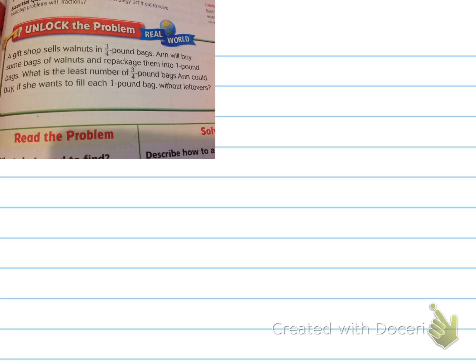A gift shop sells walnuts in three-fourths pound bags. Ann will buy some bags of walnuts and repackage them into one-pound bags. What is the least number of three-fourth pound bags Ann could buy if she wants to fill each one-pound bag without leftovers?